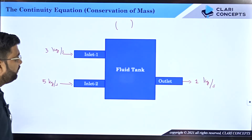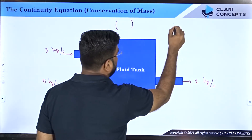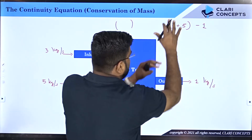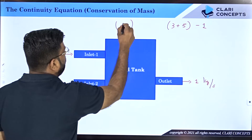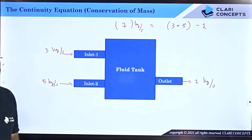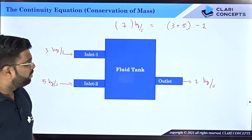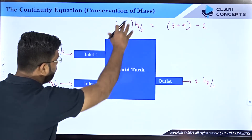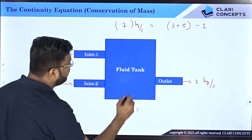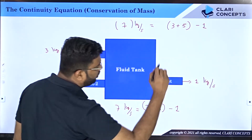You will say three plus five — the total entry is eight — and the outgoing is one. So whatever is the difference, that is seven. The tank will have seven kilograms of mass added every second. So the mass of this tank will increase by seven kg per second. This equation — seven kg per second — comes from adding the inlets, three plus five, and subtracting the outlet.